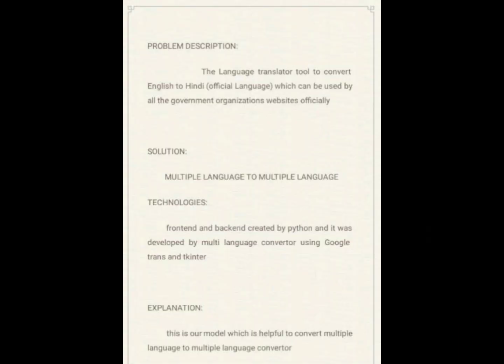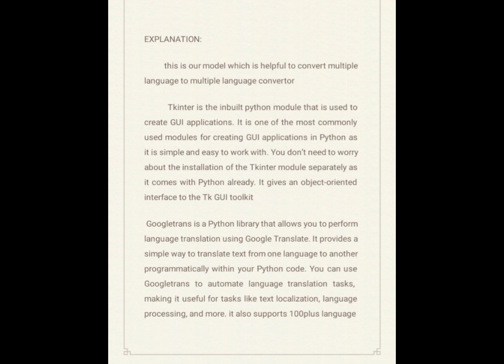Problem Description: The Language Translator Tool converts English to Hindi official language, which can be used by all government organizations' websites officially. Solution: Multiple language to multiple language technology. The frontend and backend are created using Python, developed as a multi-language converter using Google Translator and Tkinter. We use the Python open library for the database and implementation. The open library resources are Tkinter and Google Trans. Tkinter supports UI creation for translation and Google Trans supports 100 plus languages.